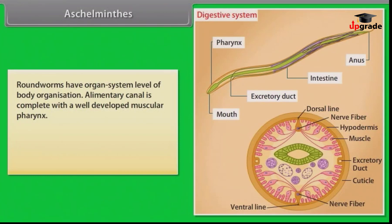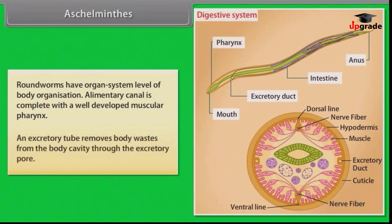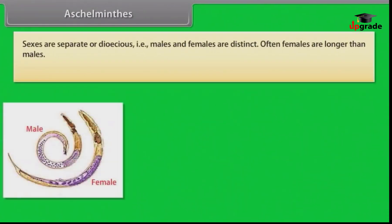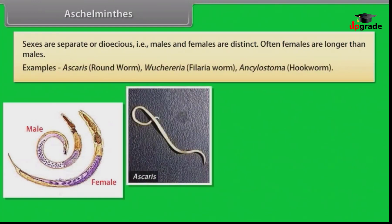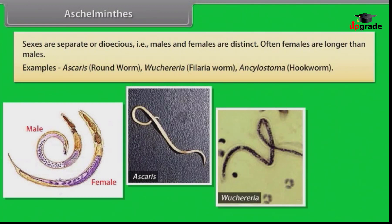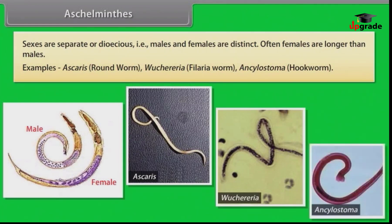The alimentary canal is complete with a well-developed muscular pharynx. An excretory tube removes body waste from the body cavity through the excretory pore. Sexes are separate, or dioecious — that is, males and females are distinct. Often females are longer than males. Examples: Ascaris (roundworm), Wuchereria (filaria worm), Ancylostoma (hookworm).